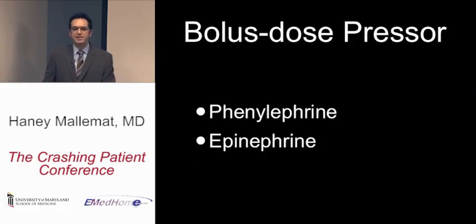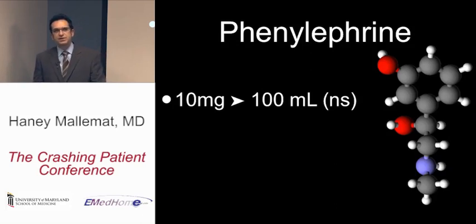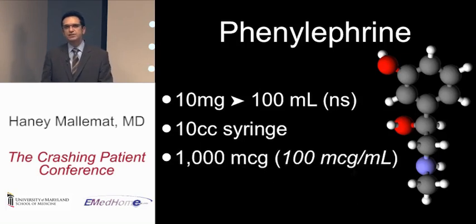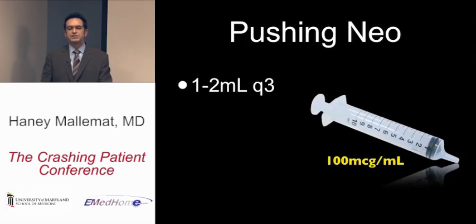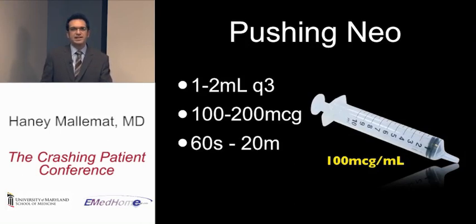The two bolus dose pressor drugs are phenylephrine and epinephrine. Phenylephrine, a pure alpha agonist, comes in 10 mg vials. Put the 10 mg (10,000 micrograms) into a 100 mL bag of normal saline, shake it up, draw out 10 cc's into a syringe — giving you 1,000 micrograms total, with 100 micrograms per cc. Administer 1 to 2 cc's every 3 to 5 minutes (100–200 micrograms per dose). Effect is within a minute and lasts up to 20 minutes. The mixed bag can also be run peripherally until a central line is placed.